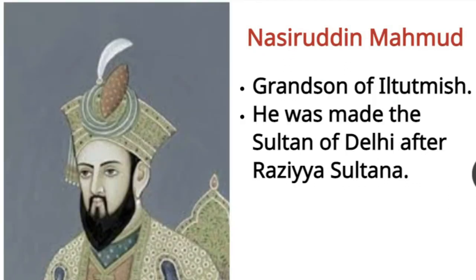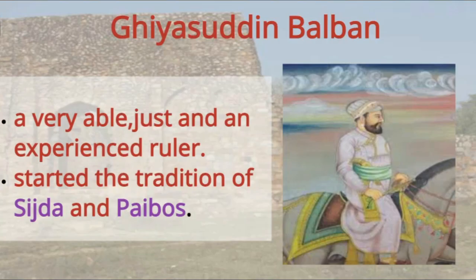After Razia Sultana, Nasruddin Mehmood, the grandson of Ilthutmish, was made the Sultan of Delhi. But he was a weak and inexperienced ruler, so he appointed Giyasuddin Balban as his commander. Balban was a very able and strict ruler. Taking advantage of Nasruddin Mehmood's weak leadership, Balban strengthened his position and became a powerful sardar. He started the tradition of Sijda and Paibos.